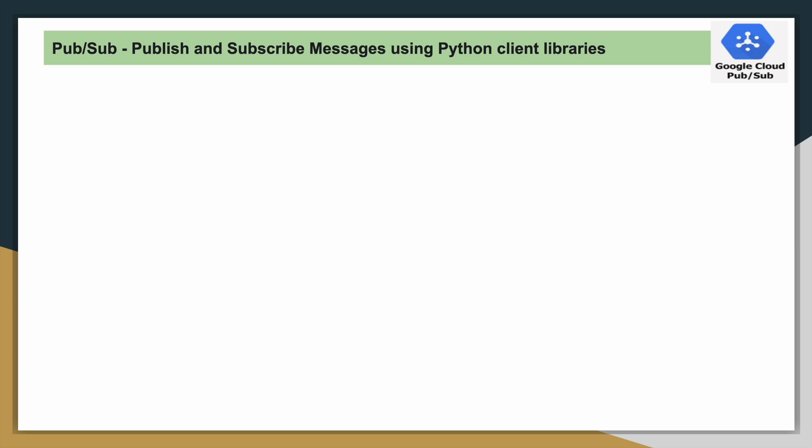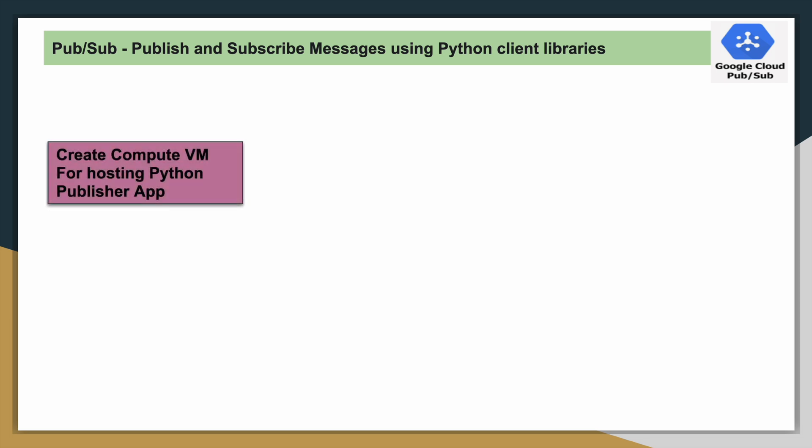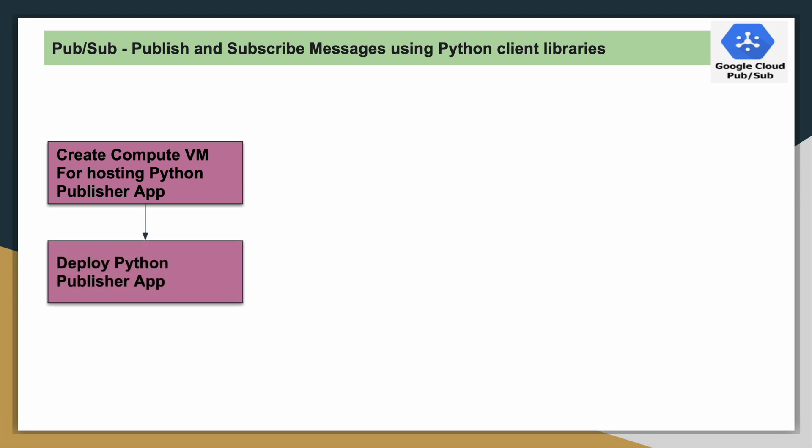In this demo I would like to use virtual machines available in Google Cloud Platform, that is Google Compute Engines. I would have used Cloud Shell but I would like to do it differently. So first we will create a virtual machine we will call it as a publisher, and then we will deploy our publisher Python script into this virtual machine.